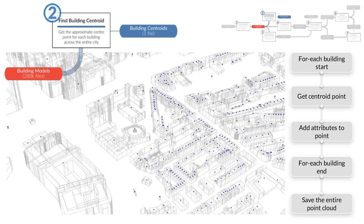In step 2, the centroid of each building is calculated. The building centroids are translated up in the vertical direction to the maximum height of the building, so that centroid points capture both the location and height of the building. All building centroid points are then saved in a single file, which is used later in step 4 when generating input models for the simulations. For each building simulated, a surrounding context needs to be generated, and the centroid points are used for deciding whether a building should be considered as part of this context.